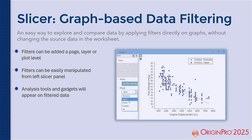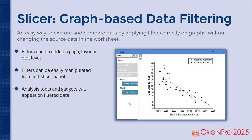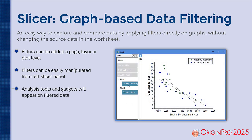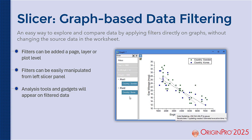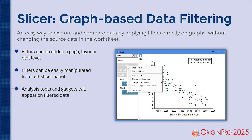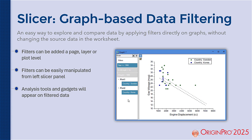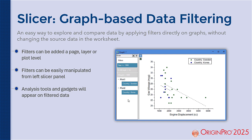In Origin 2025, applying a data filter to a graph will activate the new data slicer. This is a panel designed to help you visually explore your data by creating filters. It also allows for gadgets and other analysis tools to be added to the filtered groups of data, all directly within a graph window.